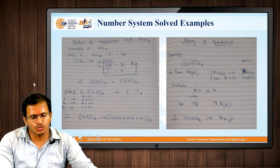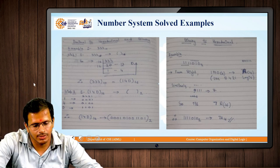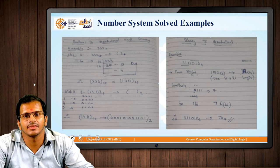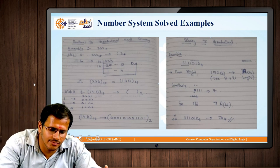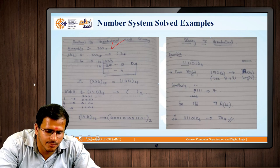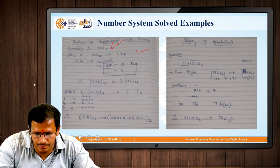These are some solved examples. You can review the slides to understand the concept. These steps show how decimal numbers are converted to hexadecimal.